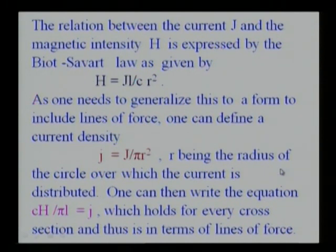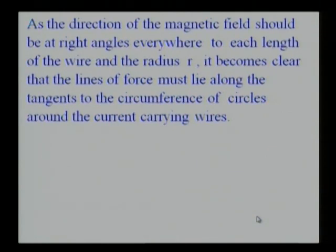One can then write the equation CH by πL equal to J, which holds for every cross section and thus in terms of lines of force. As the direction of magnetic field should be at right angles every way to each length of the wire and the radius r, it becomes clear that the lines of force must lie along the tangents to the circumference of circles around the current-carrying wires.